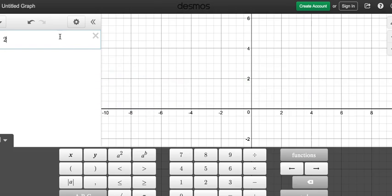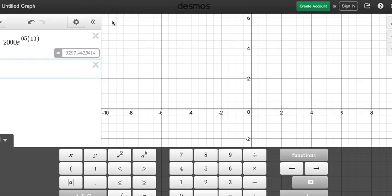So I'll do 2,000 multiplied by E. If you want to use Desmos and do the exponent, you're going to want to do the caret, that's on the 6 button. So you do Shift 6. Then 0.05, and multiply that by 10. Bam! So that's how much money we're going to get right there. $3,297.44.